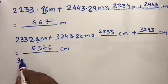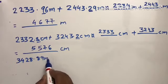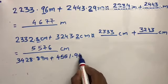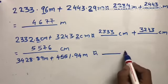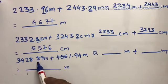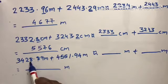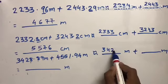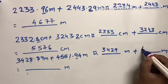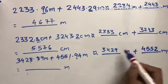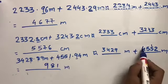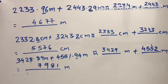One more: 3,428.89 meter plus 4,551.94 meter to nearest meter. For 3,428.89, the 8 is between 5-9, so we change. The 8 becomes 9, giving 3,429 meter. For 4,551.94, the 9 means we change. The 1 becomes 2, so 4,552 meter. Now we add: 9 plus 2 equals 11, write 1 and carry 1. 5 plus 1 plus 2 equals 8, 5 plus 5 equals 10, write 0 carry 1. 4 plus 1 plus 3 equals 8. Wait, let me recalculate. 9 plus 2 equals 11, carry 1. 2 plus 5 plus 1 equals 8. 4 plus 5 equals 9. 3 plus 4 equals 7. So 7,981 meter. Understood?